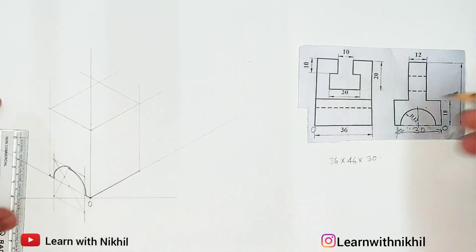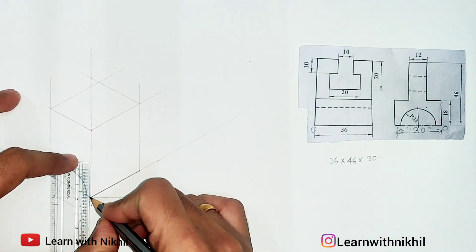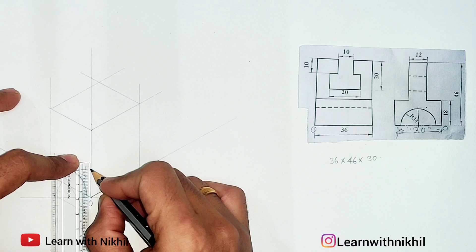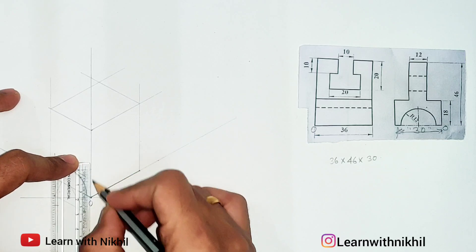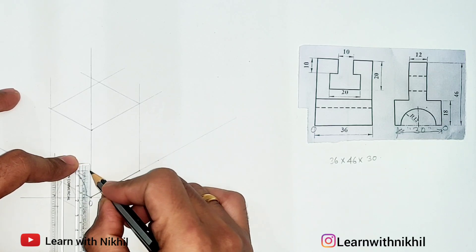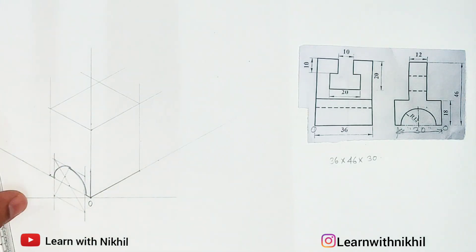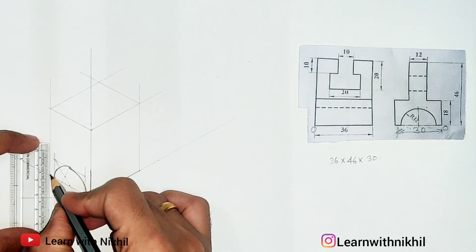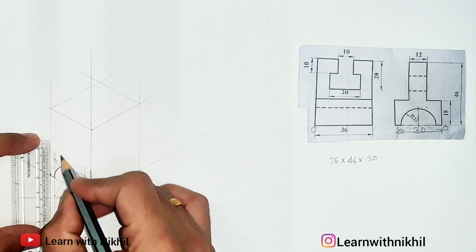After drawing the semicircle, you can see you have a height of 18 millimeters. So from here, draw a dark line at a height of 18 millimeters. On the other end as well, at a height of 18 millimeters, draw a dark line.